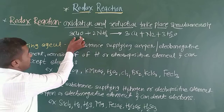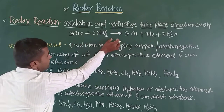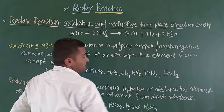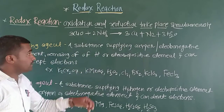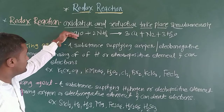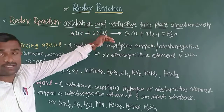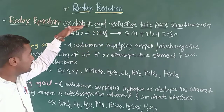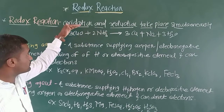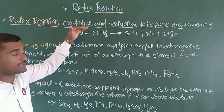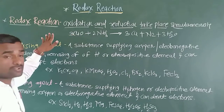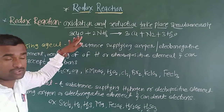For example, consider a reaction of copper oxide and ammonia. In this reaction, oxidation and reduction take place simultaneously. So any reaction in which oxidation and reduction take place simultaneously is called a redox reaction.